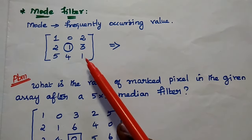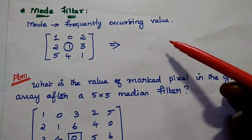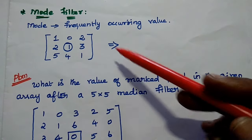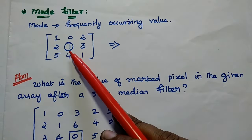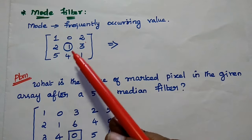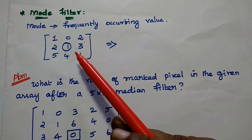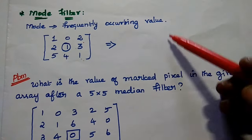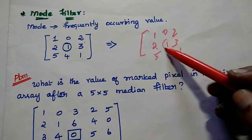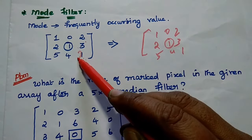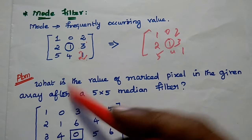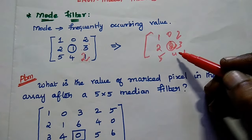The next filter is the mode filter. Mode represents the most frequently occurring value. Each pixel value is replaced with the value that occurs most frequently within the segment window. For example, if the center pixel is 1 and 1 is the most frequently occurring value in the window, then there is no change. However, if the frequently occurring value is 2, then the center pixel is replaced with 2.